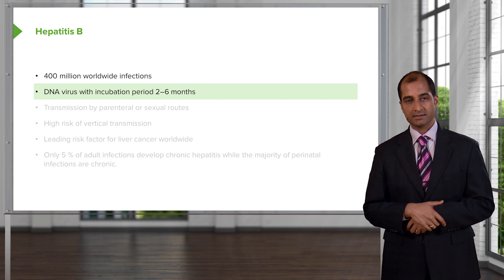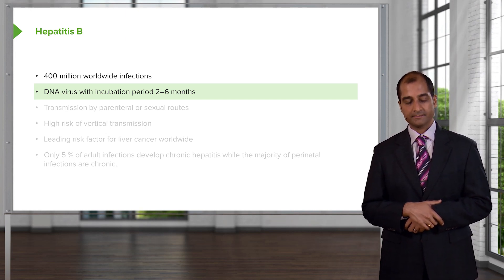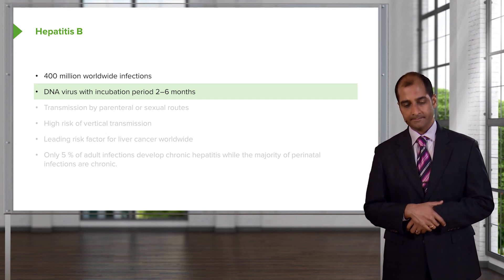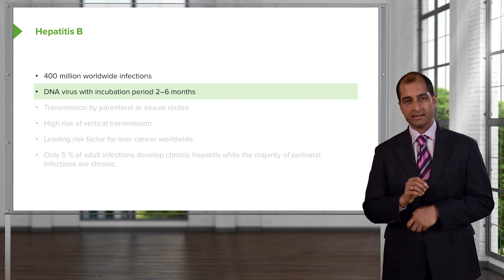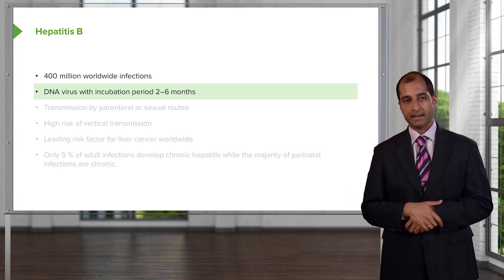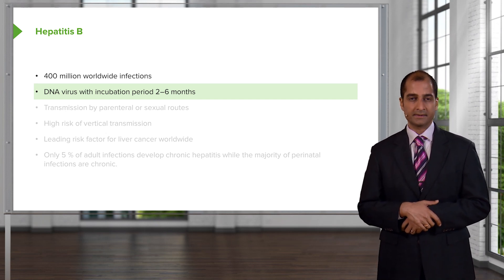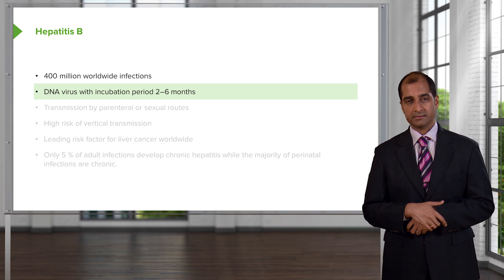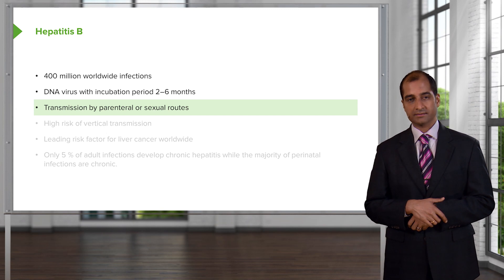Hepatitis B is a DNA virus with incubation. Two major chronic viral hepatitis important for pathology and cancer would be hepatitis B, which is a DNA virus, and hepatitis C, which would be an RNA virus. It's important that you know what kind of molecular process goes on to cancers.